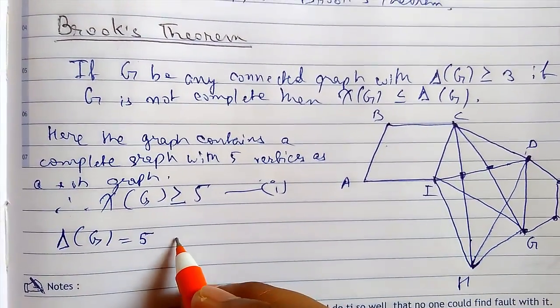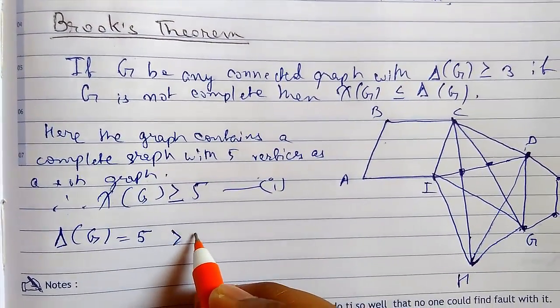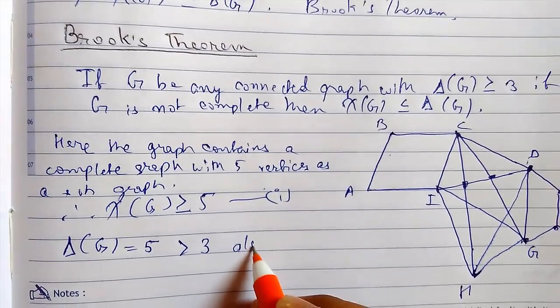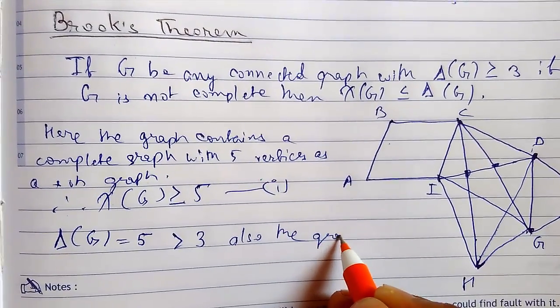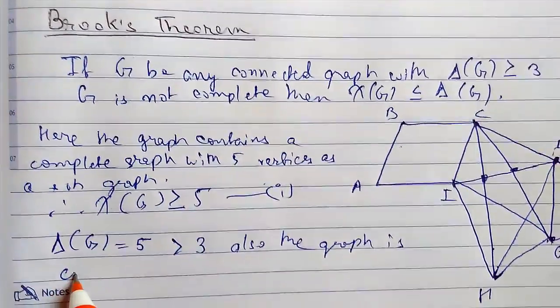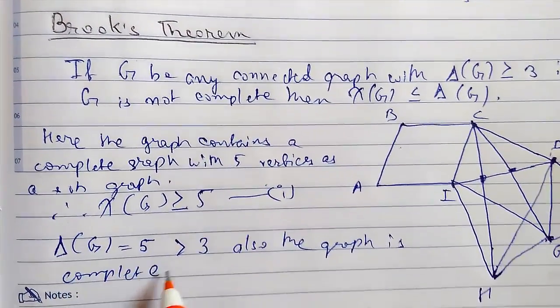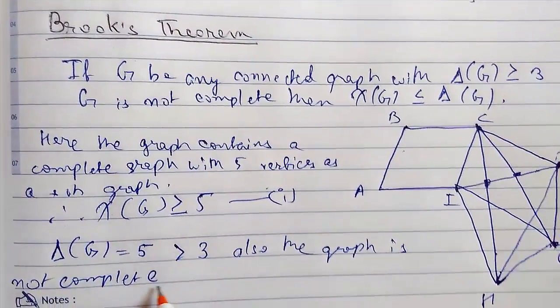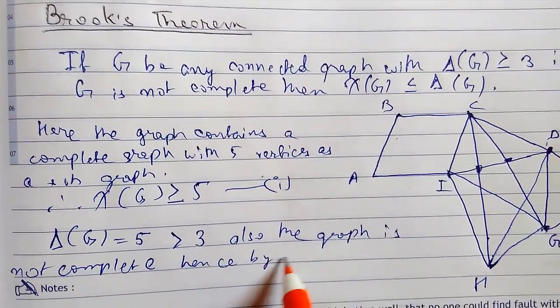For this subgraph which is also greater than 3, also the graph is complete, is not complete as a whole. Hence by Brooks theorem.